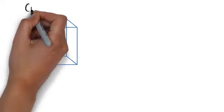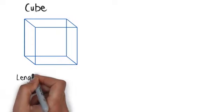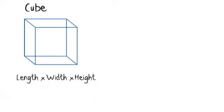Now let's move on to the volume of a cube. The volume of a cube can be simply worked out by calculating the length times the width times the height. Remember to always put units cubed at the end.